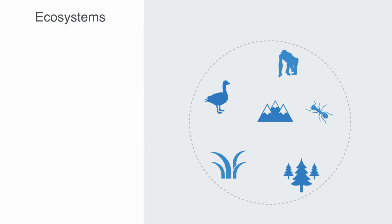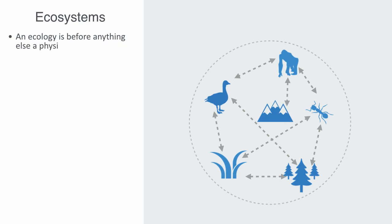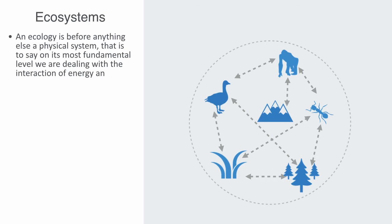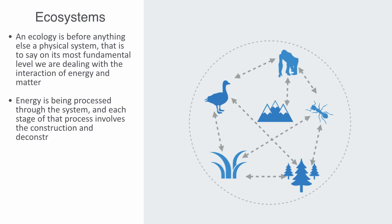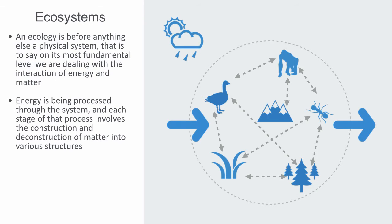An ecosystem is then a physical system, composed of a set of biotic and abiotic elements. These elements are interdependent in affecting each other and the overall state of the system. An ecology is before anything else a physical system — on its most fundamental level, we are dealing with the interaction of energy and matter. Energy is being processed through the system, and each stage of that process involves the construction and deconstruction of matter into various structures as the resources are processed across some potential energy gradient. Energy is being inputted to the system via the sun, geothermal energy or gravity, and these are driving some process within Earth's systems.